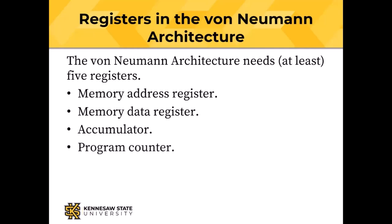A program counter — remember, the program counter holds the address of the next instruction. There is a very famous computer architecture book that gets that wrong, but as we look at how a computer has to work it will become obvious that the program counter must hold the address of the next instruction. The instruction register holds the instruction itself — it's a binary number — and gets that instruction into the CPU so we can decode it.